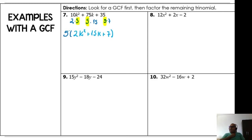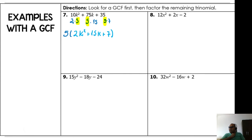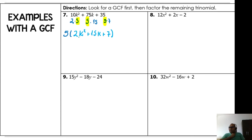Okay, now I still have an 'a' coefficient inside — a = 2. So I follow the slip and slide technique. Slip 2 to the end: 2 times 7 is 14. Now I have k² + 15k + 14 inside. My b = 15 and my c = 14.